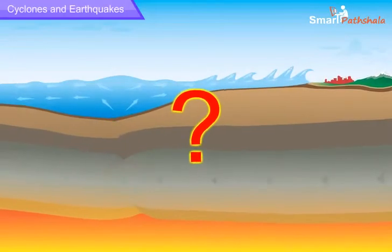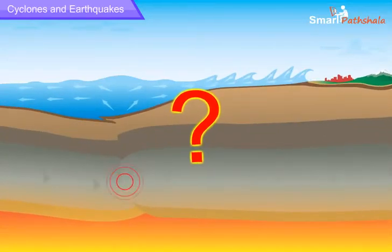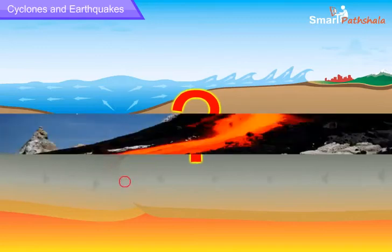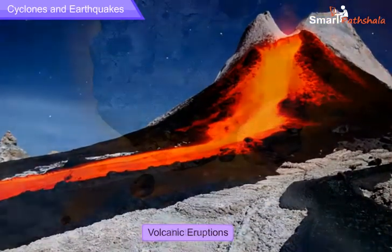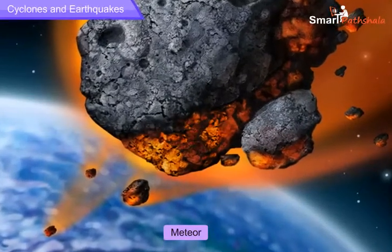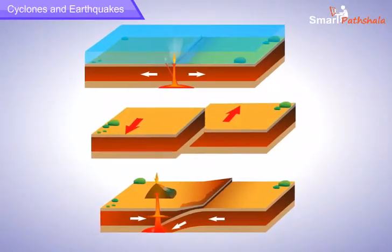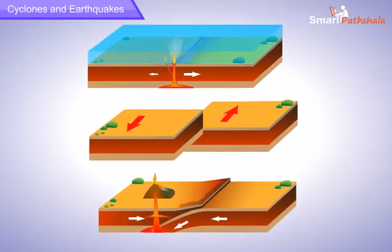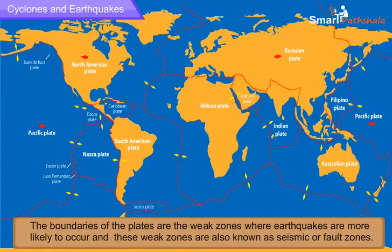Though we know the causes of an earthquake, we cannot predict when and where the next earthquake might occur. Earthquakes can also be caused due to volcanic eruptions, or when a meteor hits the earth. However, most earthquakes are caused by the movement of plates in the earth's crust. The boundaries of the plates are the weak zones where earthquakes are more likely to occur, and these weak zones are also known as seismic or fault zones.